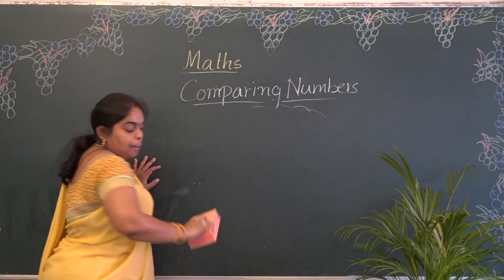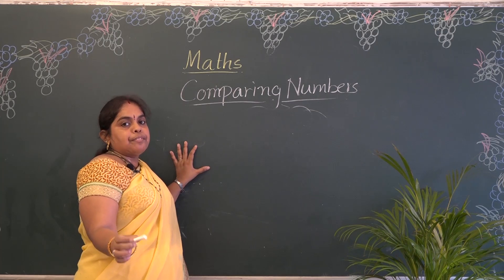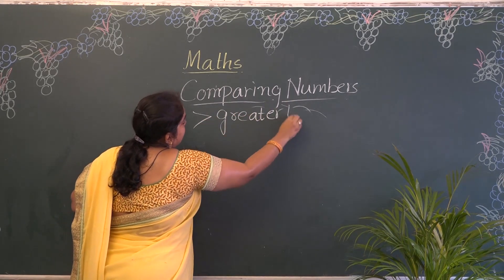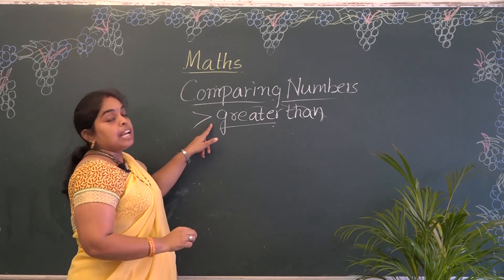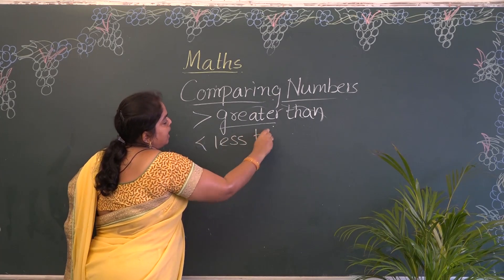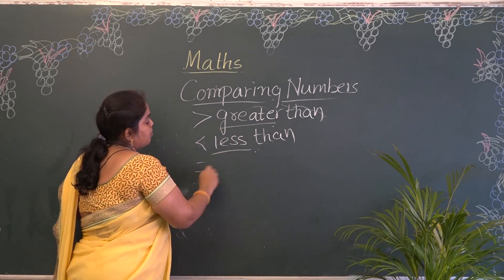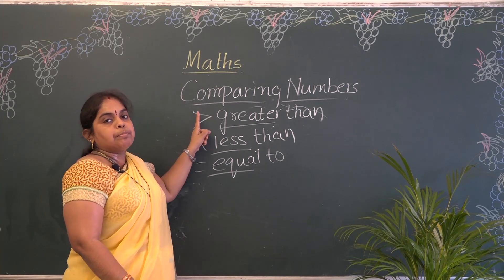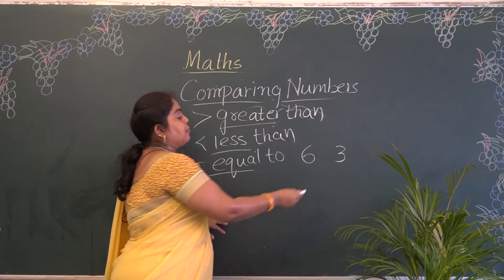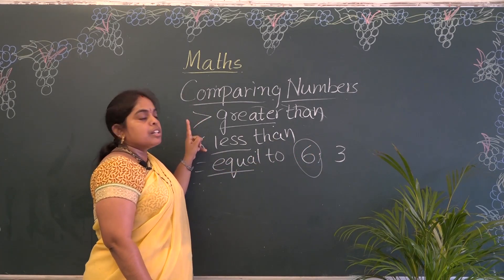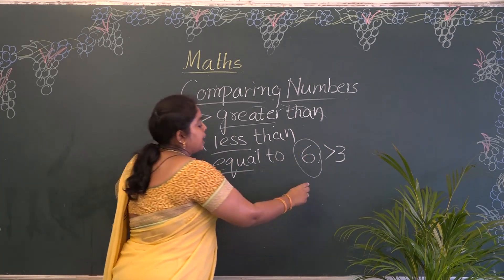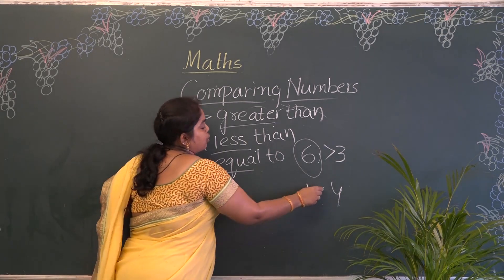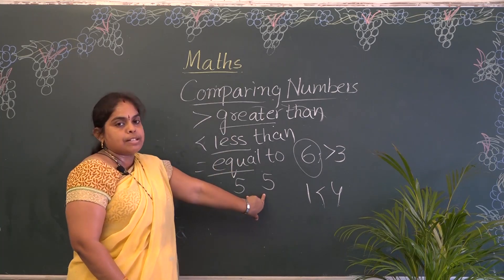One more time — when comparing objects we say big, small, thin, fat. When comparing numbers, we have 3 symbols. First: greater than — it tells about the bigger one. Second: less than — it tells about the smaller number. Third: equal to — the word itself says those 2 are equal. So if comparing 6 and 3, the first number is big — use greater than. If comparing 1 and 4, the first number is small — use less than. Equal to is used when the 2 numbers are equal.